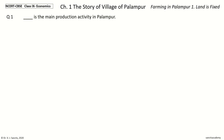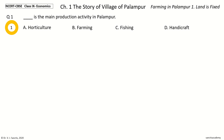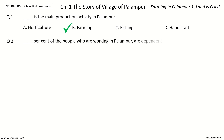Question 1: Dash is the main production activity in Palampur. The options are Horticulture, Farming, Fishing, Handicraft. Your time to choose. And the answer is Farming. So, Farming is the main production activity in Palampur.